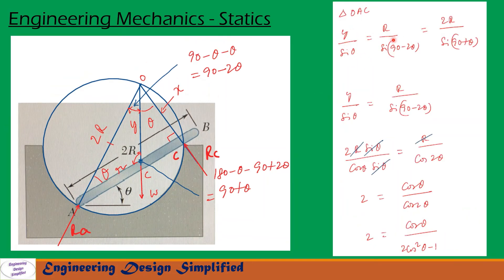Taking the first and second terms: y / sin θ = r / sin(90 − 2θ). We know from the previous slides that y = 2R sin θ / cos θ, so substituting: (2R sin θ / cos θ) / sin θ = r / cos 2θ. The sin θ and r terms cancel, giving 2 = cos θ / cos 2θ. Writing cos 2θ = 2 cos²θ − 1, we get 2 = cos θ / (2 cos²θ − 1).